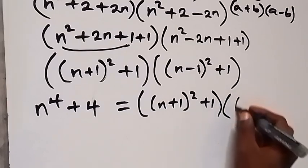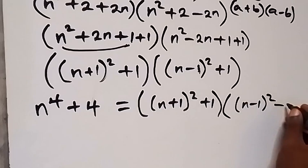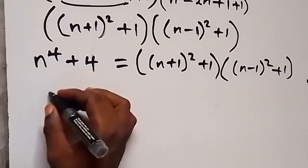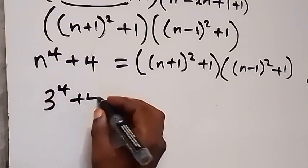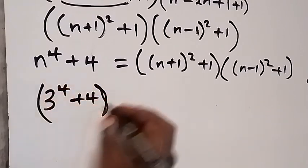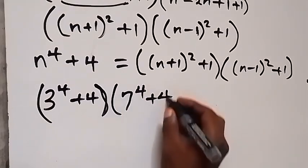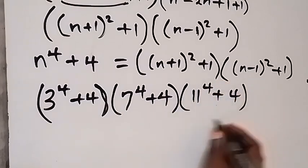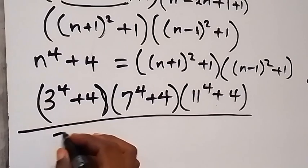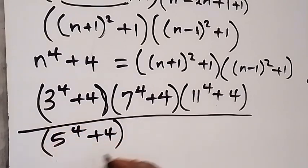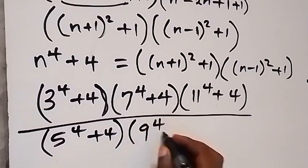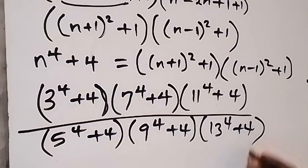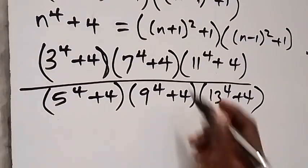Going back to the original question, we have the numerator: 3⁴ + 4, multiplied by 7⁴ + 4 (which is 11 raised to power... corrected: n = 3, 7, 11), and the denominator: 5⁴ + 4, multiplied by 9⁴ + 4, multiplied by 13⁴ + 4. We now apply the identity to each factor.